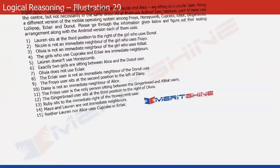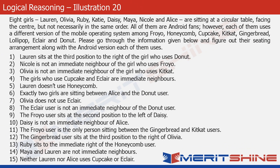Let's see how much we have learned, how good we have become, and how quickly we can solve these tricky problems. This problem is about eight girls who are sitting at a circular table. All of them use Android phones but each uses a different version of Android. With the help of 15 statements, we need to figure out their seating arrangement and the version of the mobile operating system used by each of them. My advice is to pause the video, attempt the problem first, and restart once you are done. You can get a downloadable copy of this question from our website.